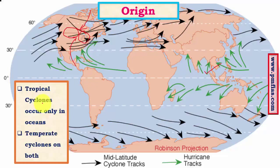Tropical cyclones occur only over oceans because they require large amounts of moisture and latent heat of condensation to sustain themselves. When a tropical cyclone makes landfall, the moisture supply is cut off and the storm quickly dies. Continents don't provide the moisture needed, so tropical cyclones form exclusively in oceanic regions.